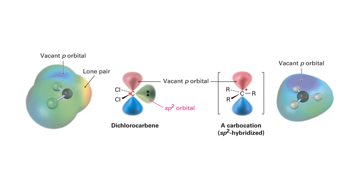The carbene species has two bonds, one lone pair electron, and one empty p orbital. So as a whole, this carbene has an sp2 orbital structure, meaning it is a planar triangle structure, which is similar to a carbocation. But in a carbocation, it has three bonds and the center carbon is positively charged, whereas in this carbene structure, the overall charge is neutral, and instead of an empty orbital, one lone pair electron occupies that sp2 orbital.